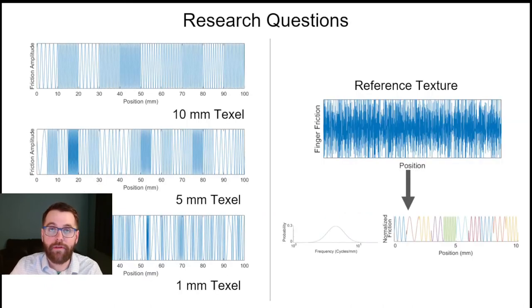To study this rendering algorithm, we pursued two research questions. First, how small must the physical length of a texel be for the subject to find a texture indiscernible from another rendered using the same underlying parameters? And second, how reliably can subjects control the distribution parameters to reproduce similar multi-frequency textures?